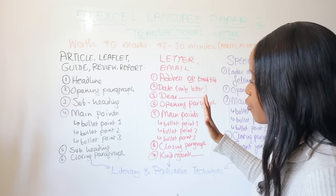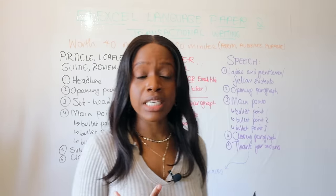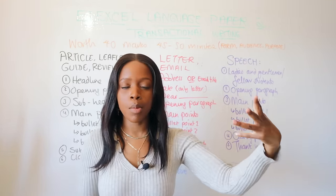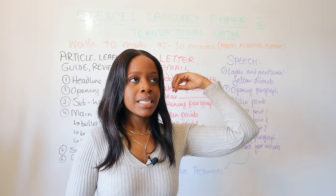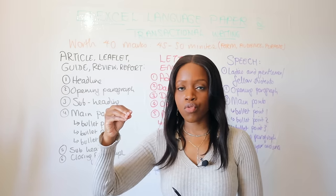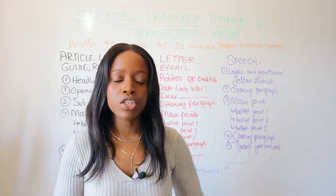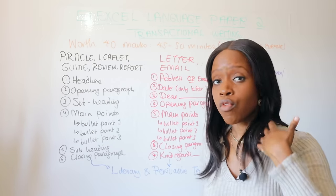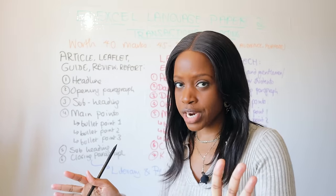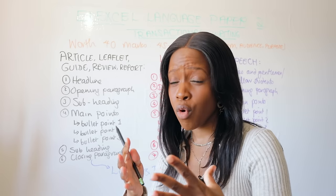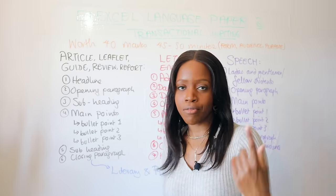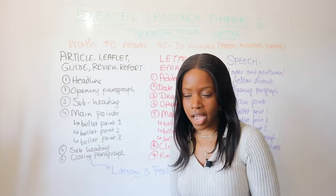As you can see behind me, there are different colour codings for the different forms of transactional writing. When it comes to transactional writing, you don't need to stress out too much about what's going to come up in the test, because you can literally anticipate it. If you're asked to write a leaflet, you know the layout and the form. If you're asked to write a guide or a speech, same thing. I'm going to walk you through that now, before showing you a model answer I have prepared.